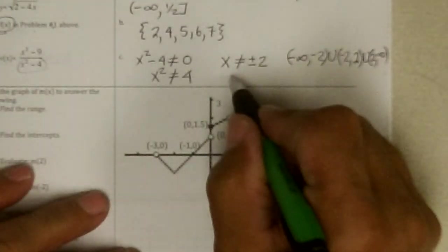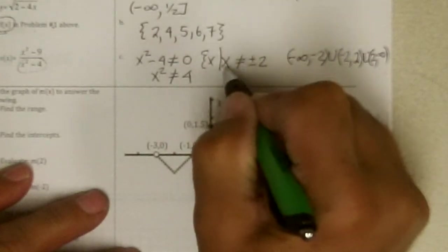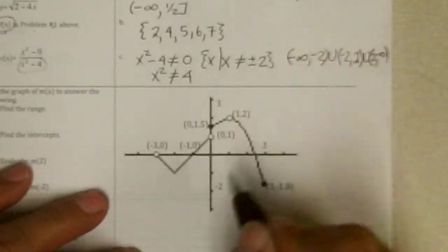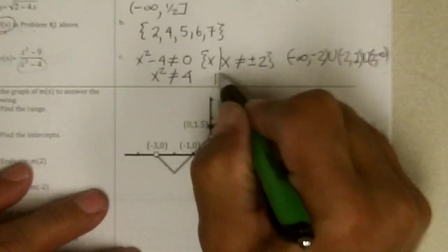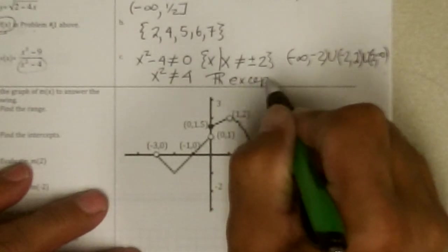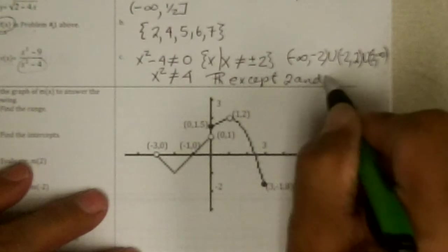Or we could say, probably easiest here, we could do this: set whose elements are all numbers such that x is not equal to plus or minus 2 in set. Or we could say, all reals except 2 and negative 2.